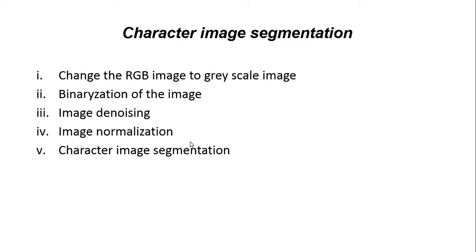Before the segmentation, we should do some operations on the image. The first one is to change RGB to grayscale. The second one is binarization of the image, and then image denoising, and then image normalization — we should change the size to a proper size. The next step is the correct image segmentation.